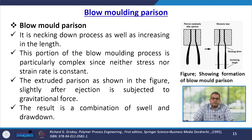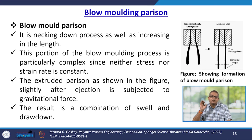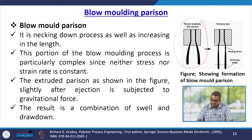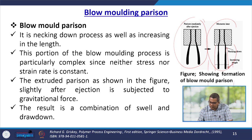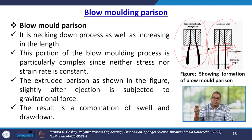Before entering the blow moulding operation, the melted polymer part is called the parison. This involves a necking-down process as well as an increase in length. This portion of the blow moulding process is particularly complex since neither stress nor strain rate is constant — immediately after ejection the parison undergoes necking down as it enters the blow mould.